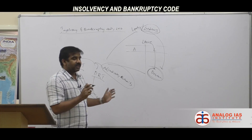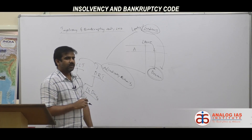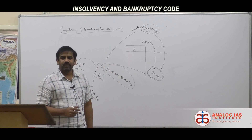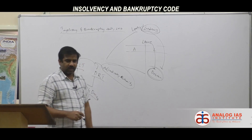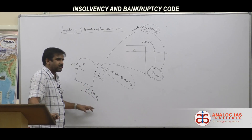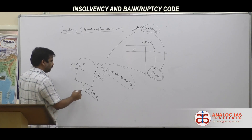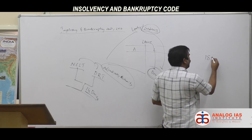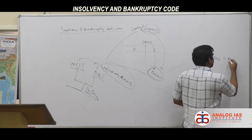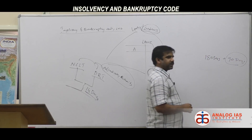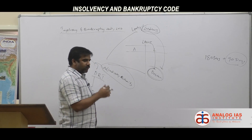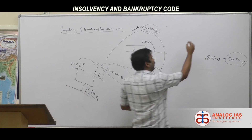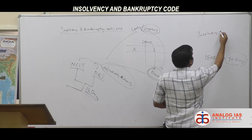The key purpose of the 14-day window is that the authority must clearly say it will accept the application and move it forward to resolve the issue. Once accepted, the entire resolution process has to be completed within 180 days. In exceptional cases, an additional 90 days may be granted. During this period, insolvency professionals are appointed.